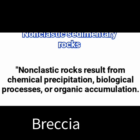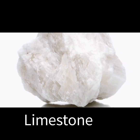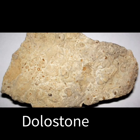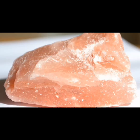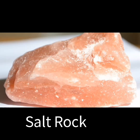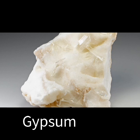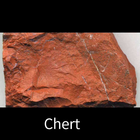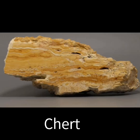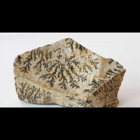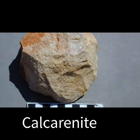Non-clastic sedimentary rocks form from chemical precipitation. Examples include limestone, dolostone, rock salt, and gypsum, which are the best examples of non-clastic sedimentary rocks, as well as chert, travertine, and halite.